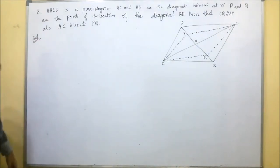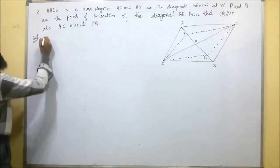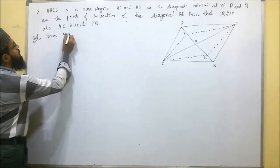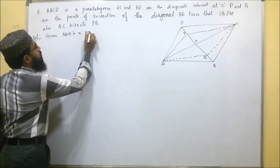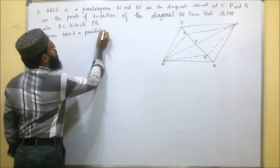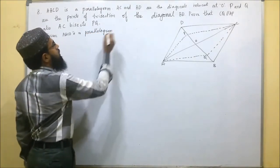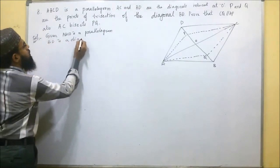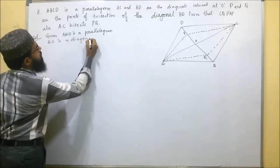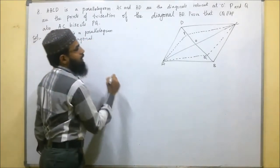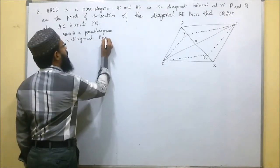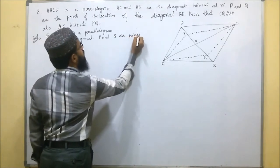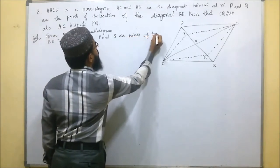For proving this, we will first write the given information. Given: ABCD is a parallelogram. BD and AC are both diagonals. P and Q are points of trisection of diagonal BD.